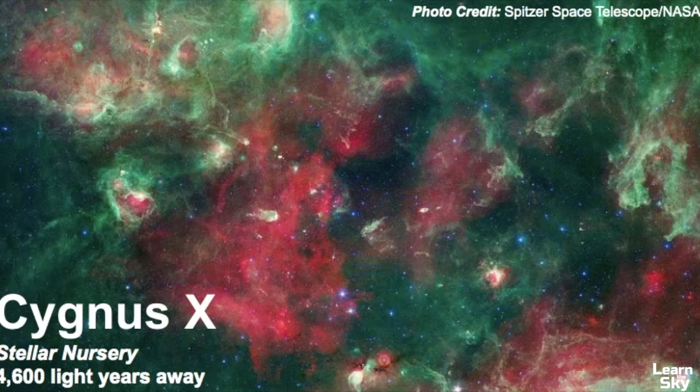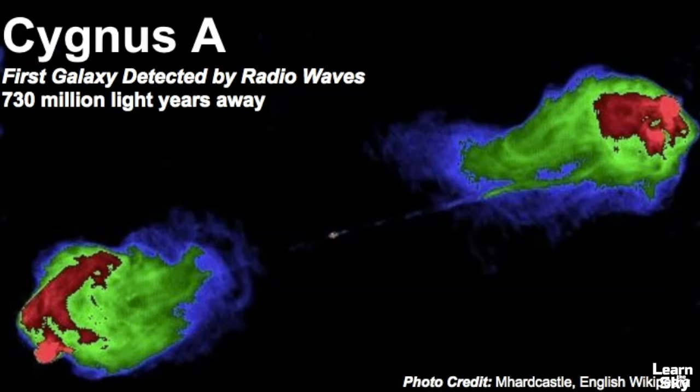There's also another area called Cygnus X. This is known as a stellar nursery that's estimated to be 4,600 light years away. There's also a galaxy called Cygnus A and this is the first galaxy that was ever detected by radio waves. It's pretty far away estimated to be 730 million light years away.